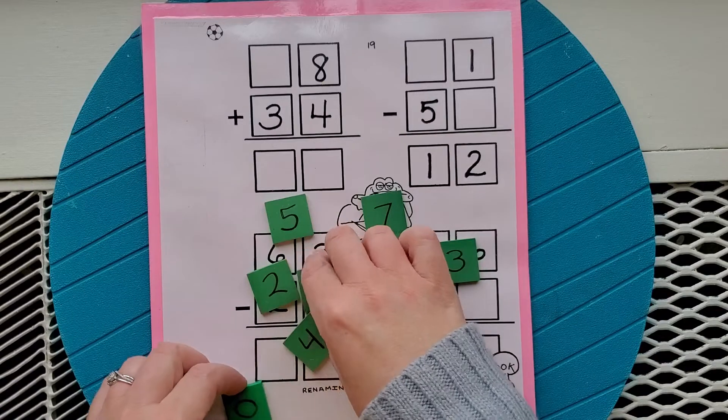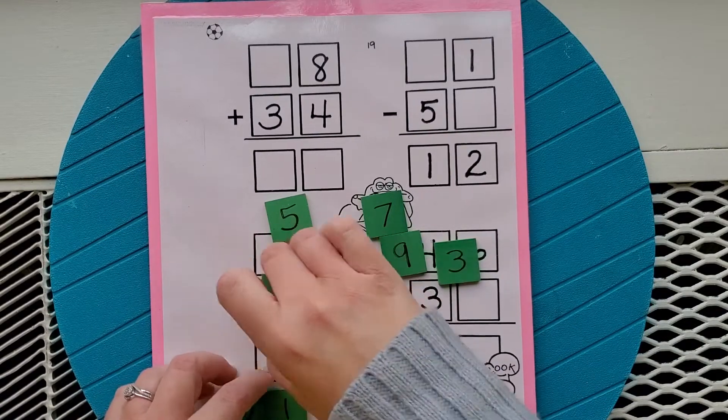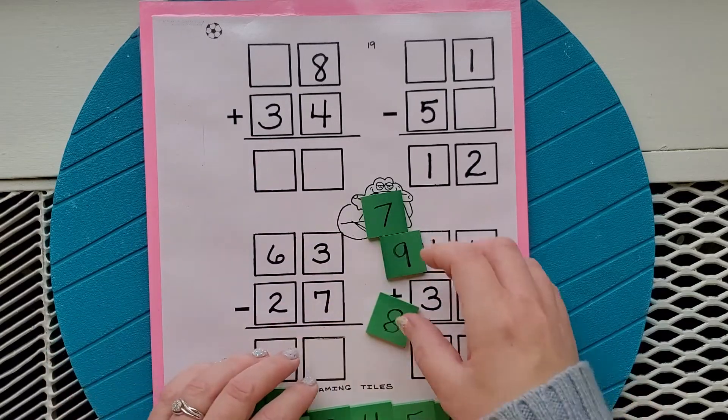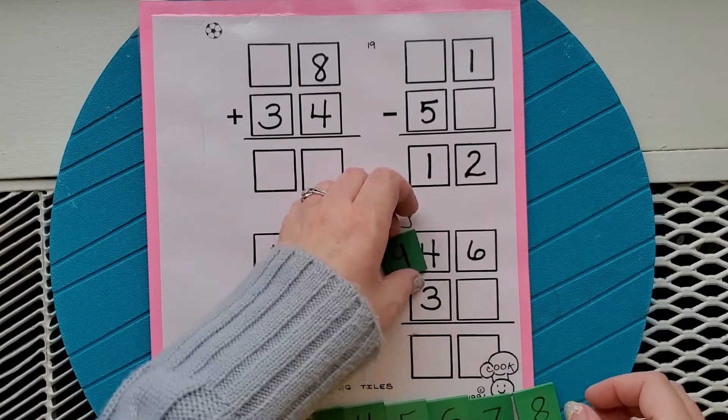So you want to make sure that you have 0, 1, 2, 3, 4, 5, 6, 7, 8, 9, okay?